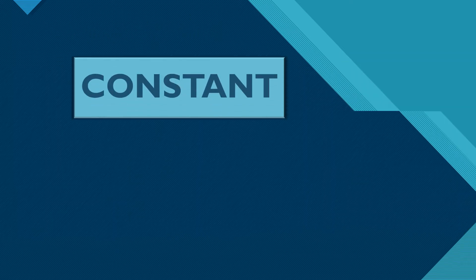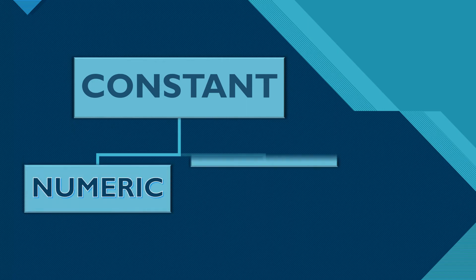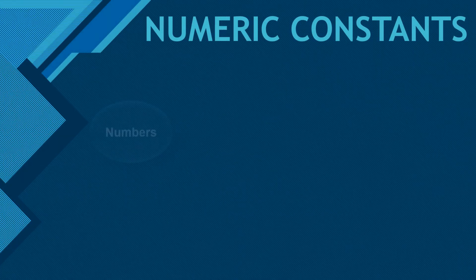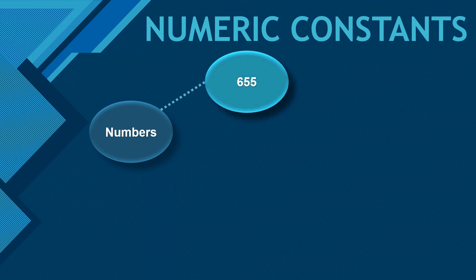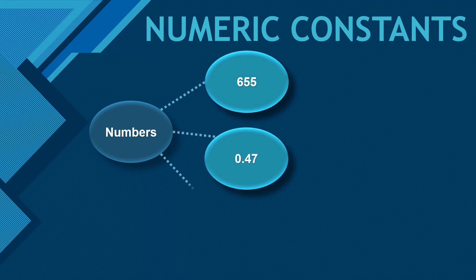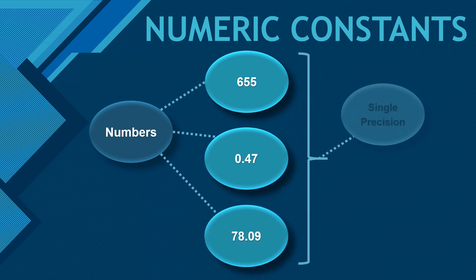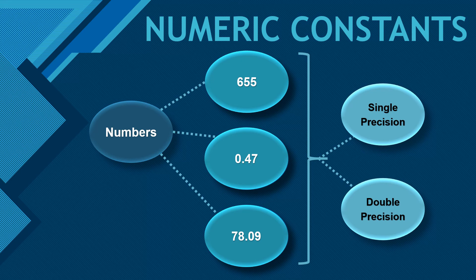A constant is of two types: numeric and string. Numeric constants are numbers — they can be integers, floating point numbers, or real numbers — and these could be single precision or double precision.